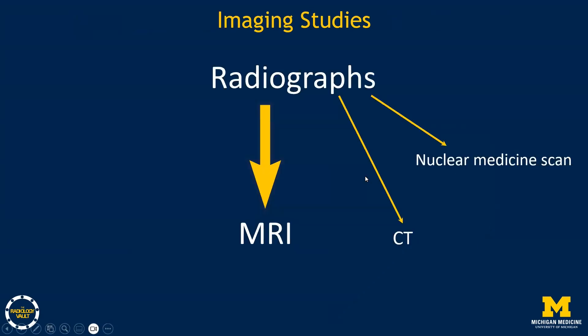On call, you're mostly going to be looking at radiographs, which are the first-line study for evaluating osteomyelitis. MRI will give the most information about soft tissue and bone changes, especially bone marrow. For patients who can't get an MRI, CT will give some additional information, but won't show all the marrow changes. Nuclear medicine scans can also help with problem solving, but they won't be covered here.